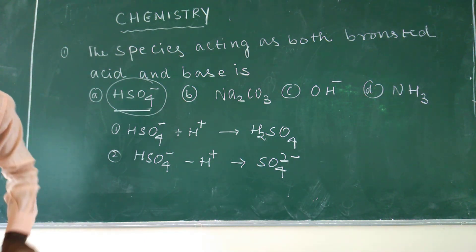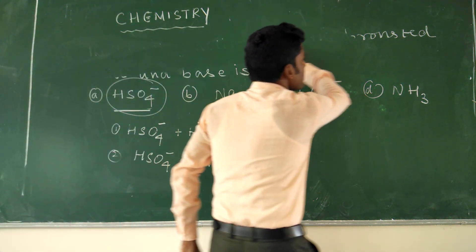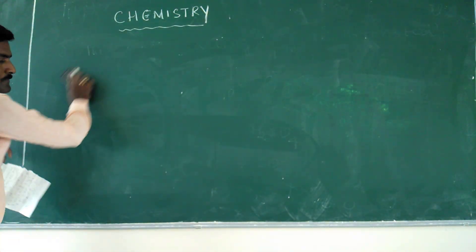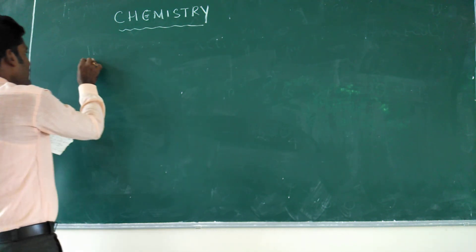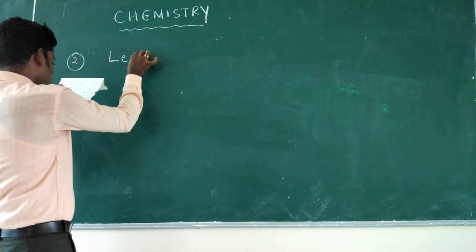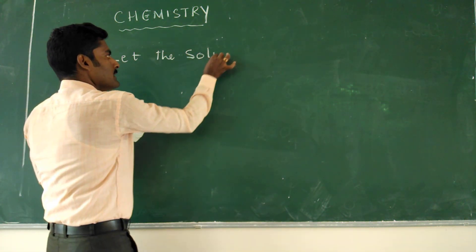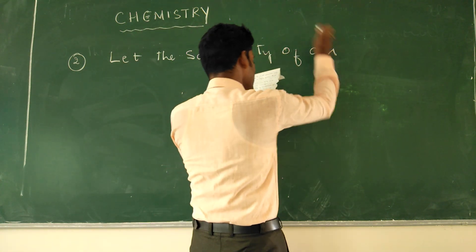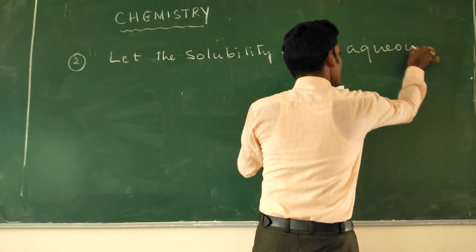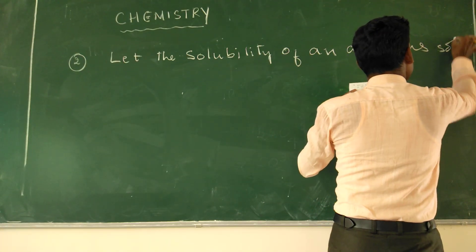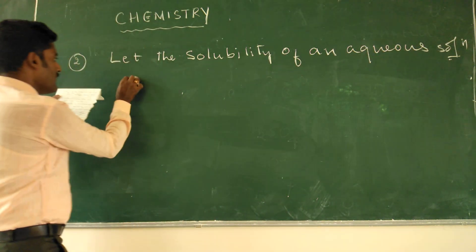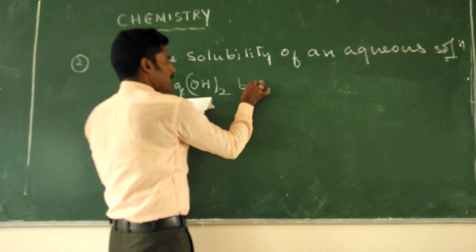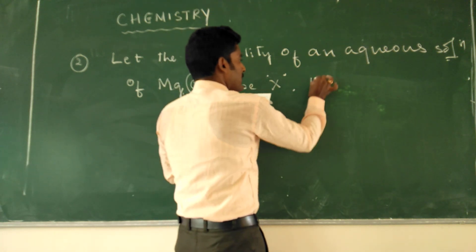Okay, come to the second question. Second question says that, let the solubility, let the solubility of an aqueous solution, aqueous solution of Mg(OH)2, magnesium hydroxide, be X.